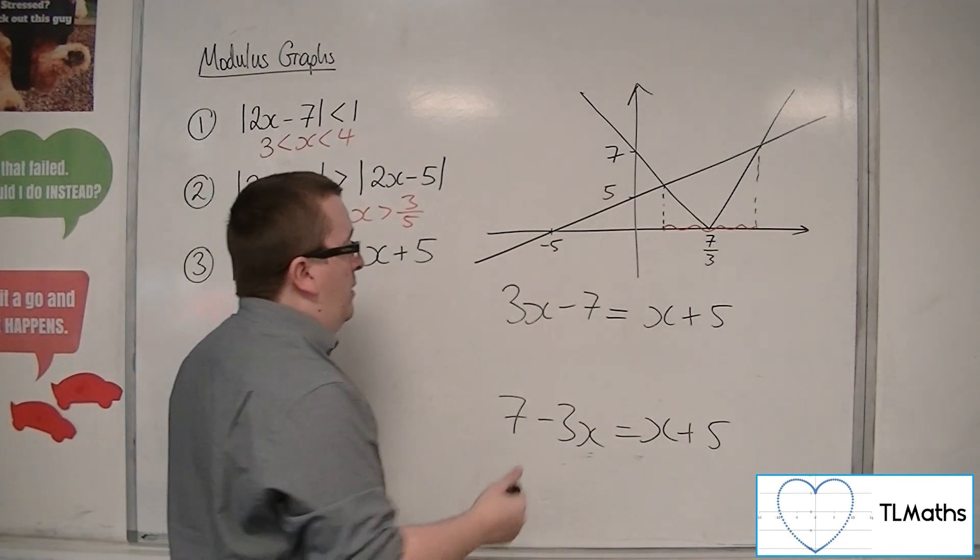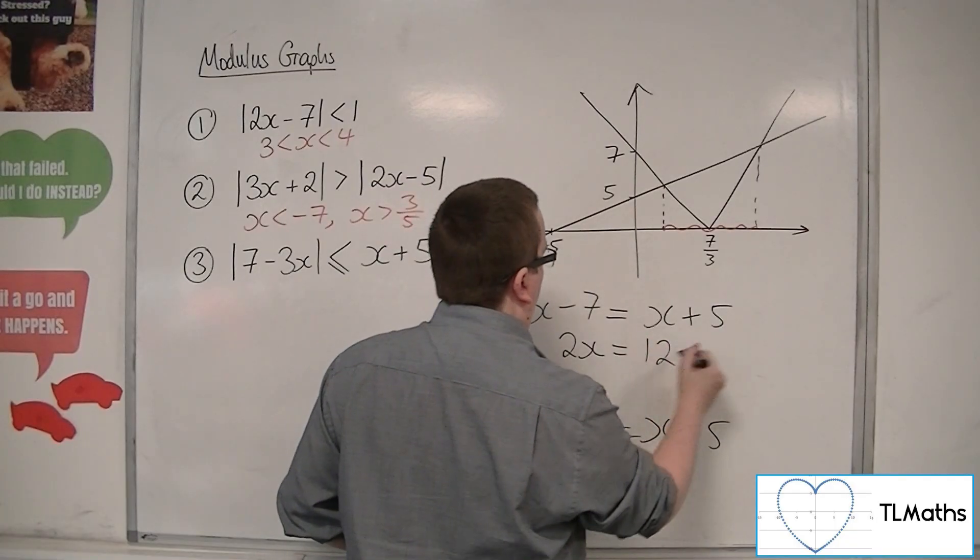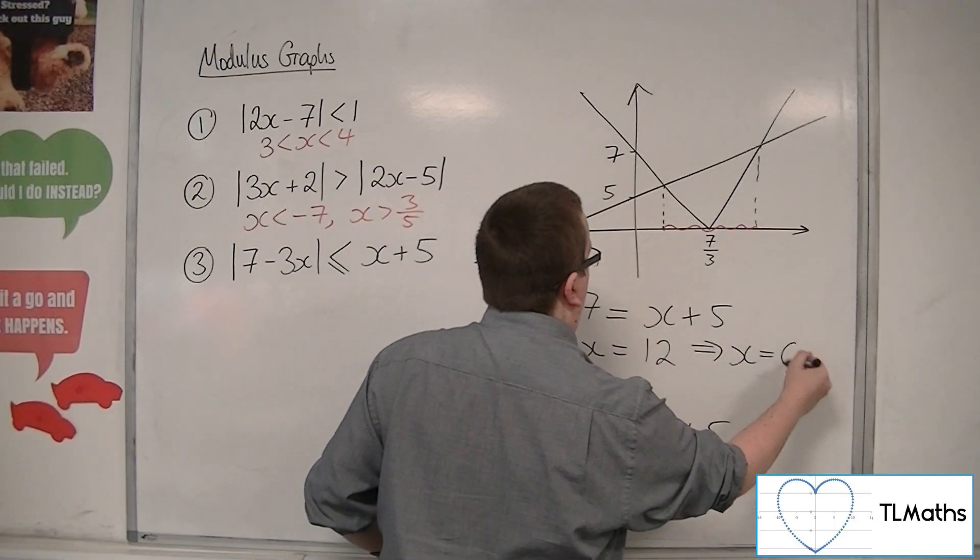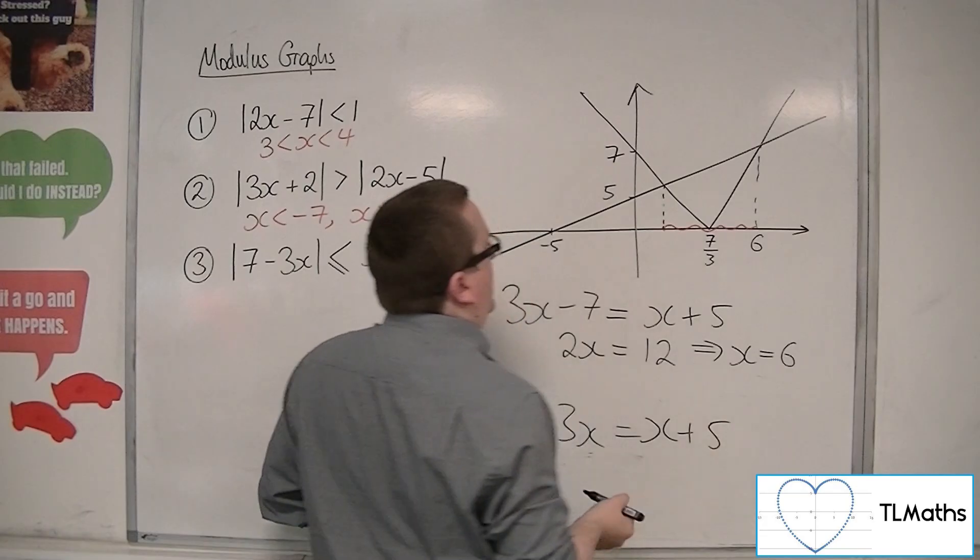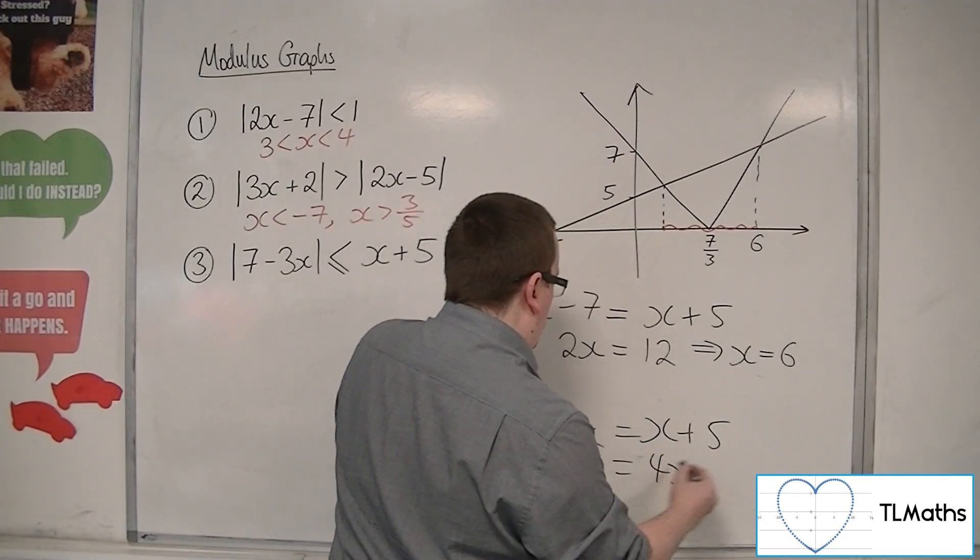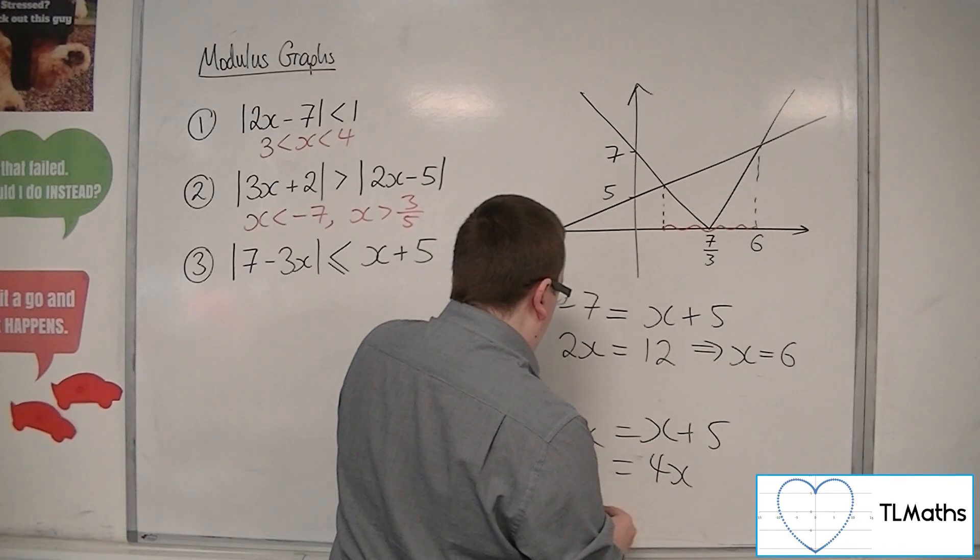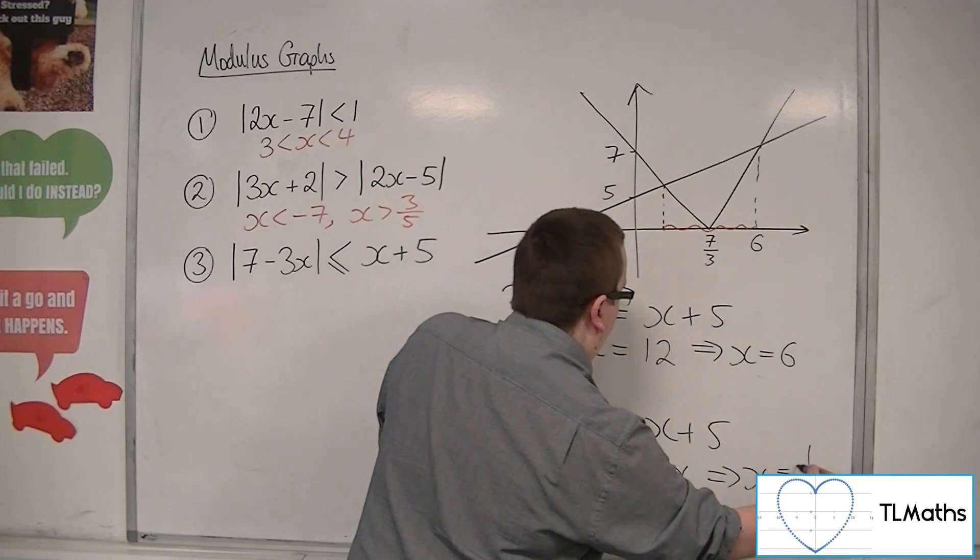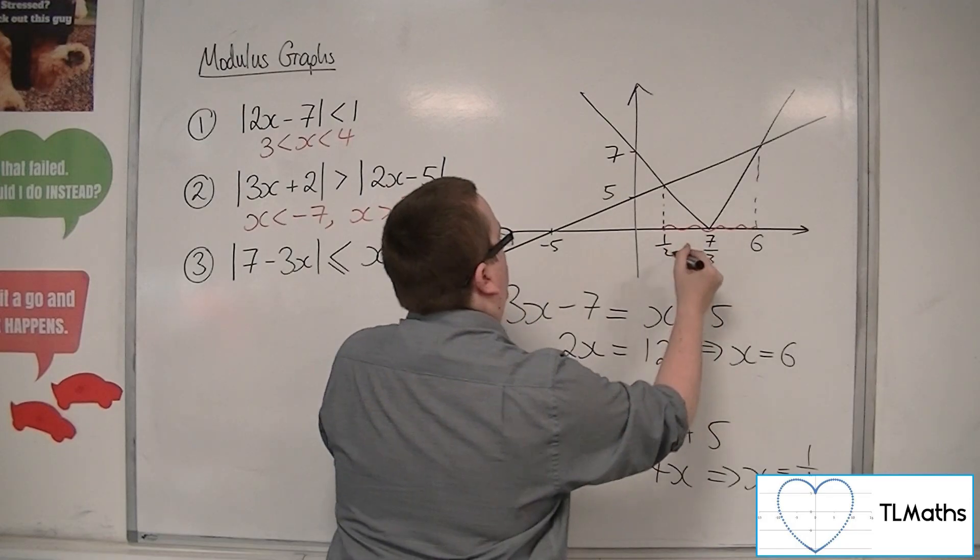So, if I solve both of those, I'm going to get 2x is equal to 12. So, x is equal to 6. So, that's giving me that value there. And adding the 3x to both sides, subtracting 5 from both sides. And so, x would have to have been a half. So, that's a half there.